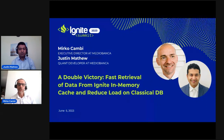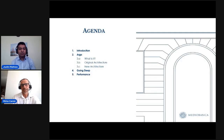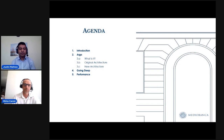Today we will see how Apache Ignite has helped us overcome some performance issues we discovered in our web application. After a brief introduction, we will explore what Argo is, its initial architecture, and how it has evolved to overcome some performance issues. Then we will dive into some specific aspects of how the application works with Apache Ignite.